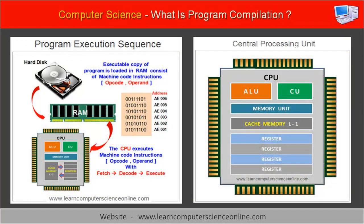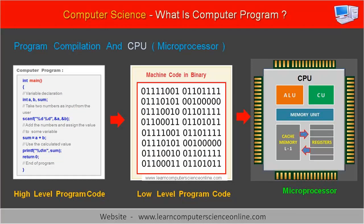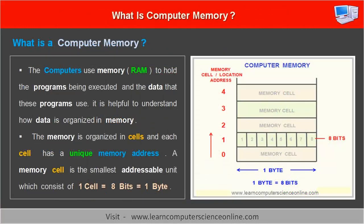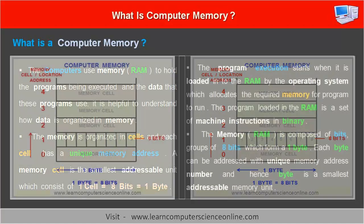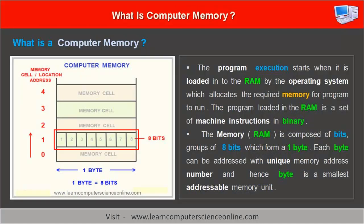Let us now understand how computer memory is organized. The CPU is the brain of the computer system. The CPU can understand and execute only machine code instructions in binary. The binary code is represented using only two digits, that is zero and one. Therefore, the computer memory is logically organized in terms of a set of bits called bytes. The computer main memory RAM is composed of a number of bits. For example, a group of 8 bits is equal to 1 byte. Each byte in computer memory can be addressed with its unique memory address number. Therefore, the byte in memory is the smallest addressable memory unit.